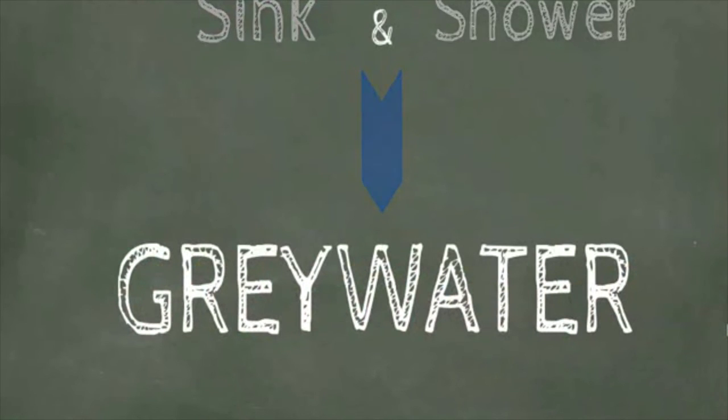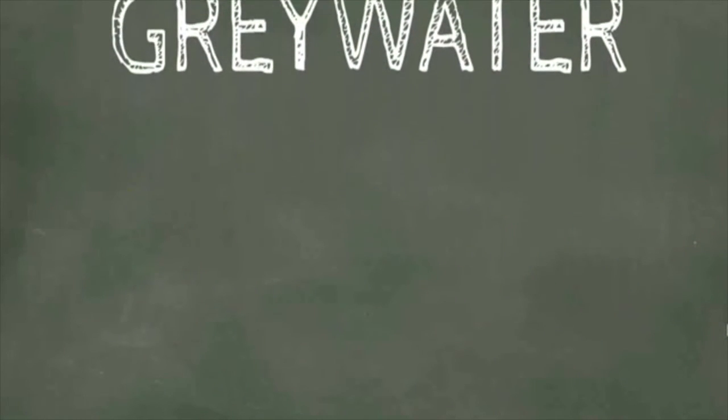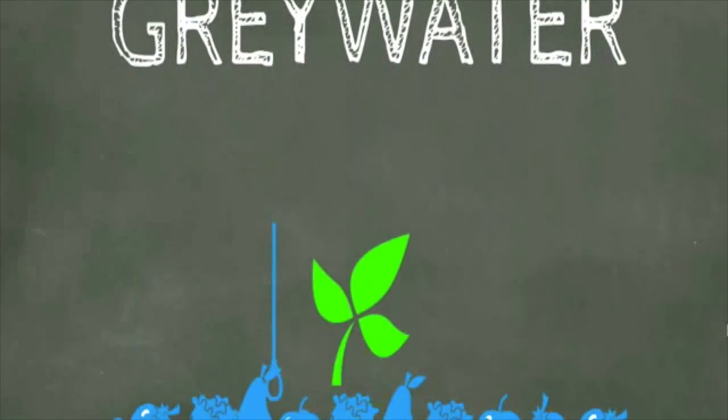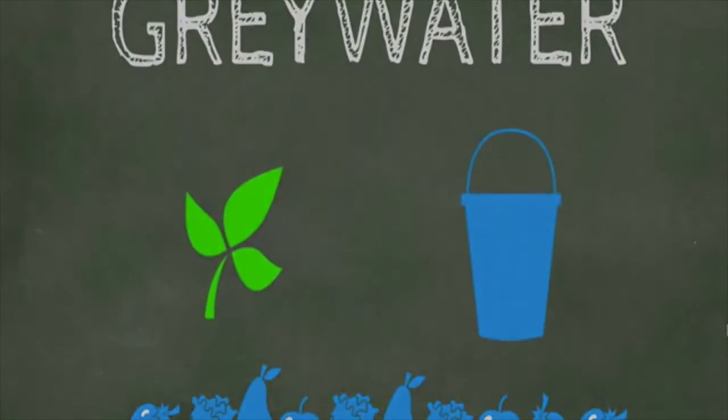Also called greywater. By separating greywater from toilet wastewater, we can reuse it for our irrigation and thereby reducing our domestic water consumption by 50%.